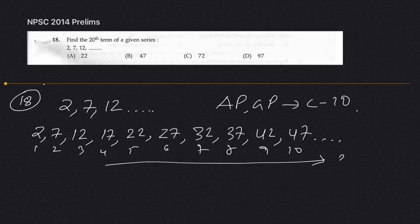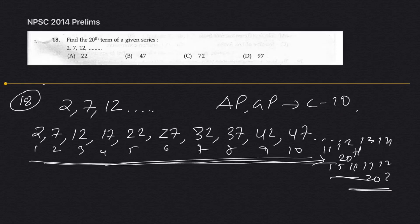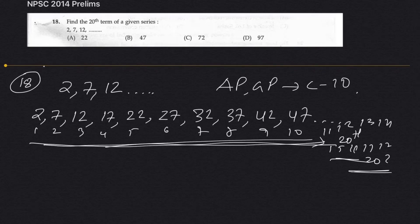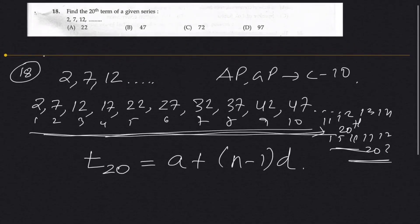We need to find the 20th term of the series. If you don't know the formula for the exam, you'd need to list out all terms, but there is a formula for this. T_n = a + (n−1)d. Using this formula we get the answer. Here, 'a' is the first term, which is 2.